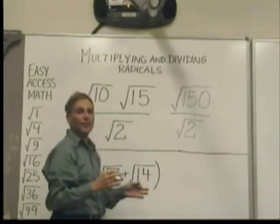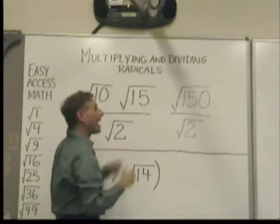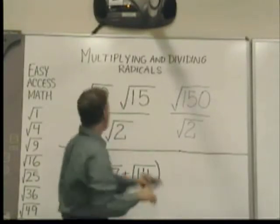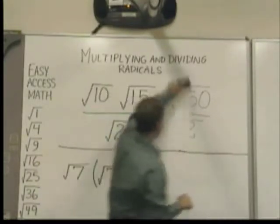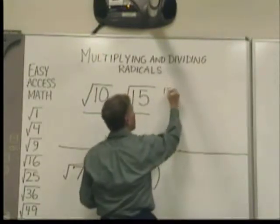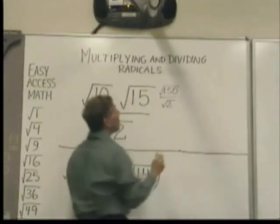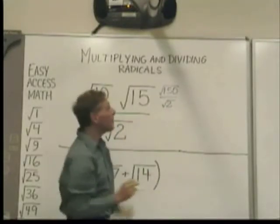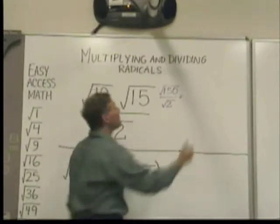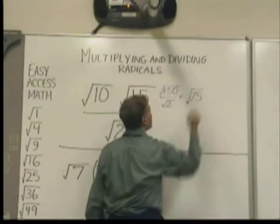So I have one hundred and fifty in the radical over two in the radical, and I divide. That would give me seventy-five in the radical. Let me put that over here. We'll make this smaller: one fifty over two, both of them still in the radical. When I divide one fifty by two — regular division — you end up with seventy-five still in the radical.